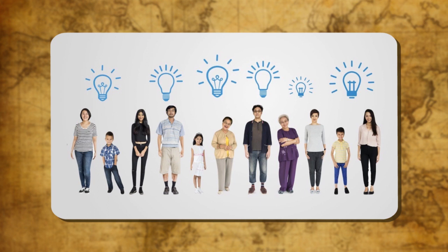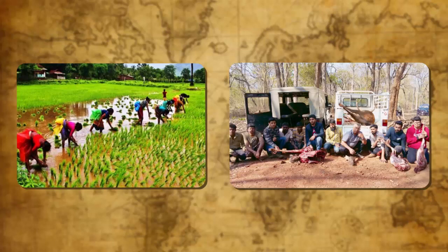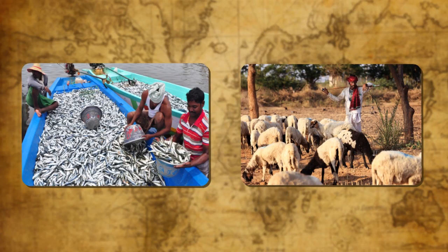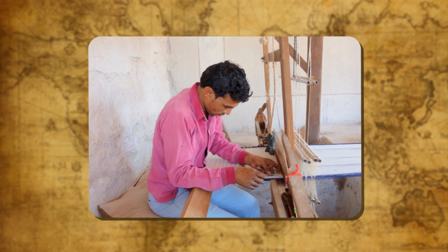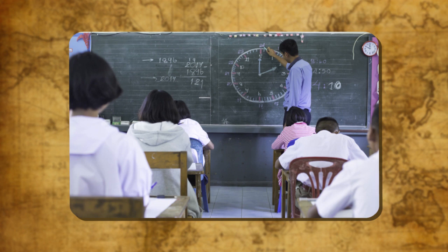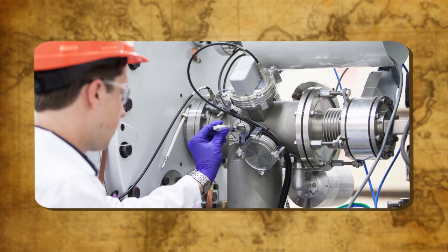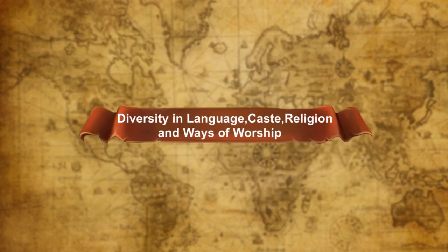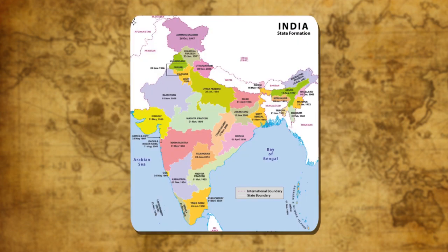When man began to live in society, activities were divided into three categories: primary activities like agriculture, hunting, fishing, and herding; secondary activities like weaving, dyeing, and carpentry; and tertiary activities like teaching, banking, and engineering.